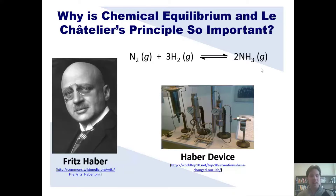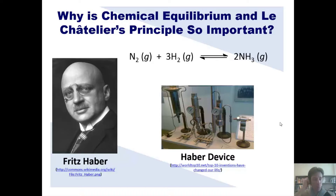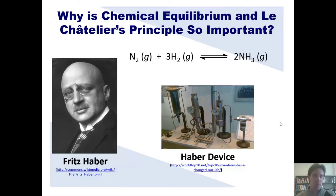This invention also allowed farmers to significantly increase food productivity across the earth. Interestingly, Fritz Haber was awarded the Nobel Prize for this discovery, but he also became the father of modern chemical warfare — most of the chemical warfare agents used by Germany during World War I were invented by him. He is thus sometimes called the father of life for inventing the Haber process, and the father of death for inventing chemical warfare. That brings us to the end of this chapter on chemical equilibrium.